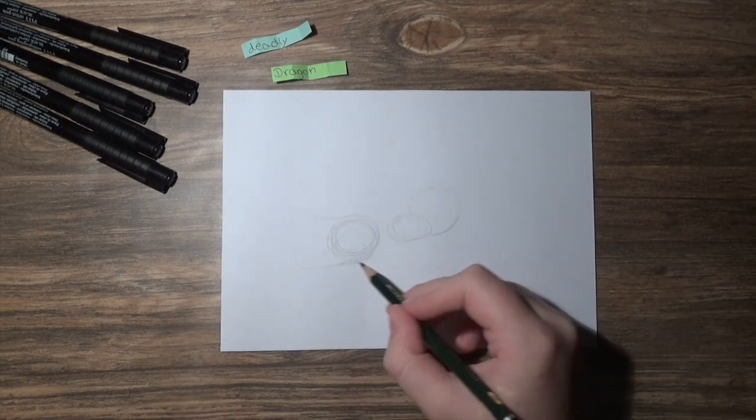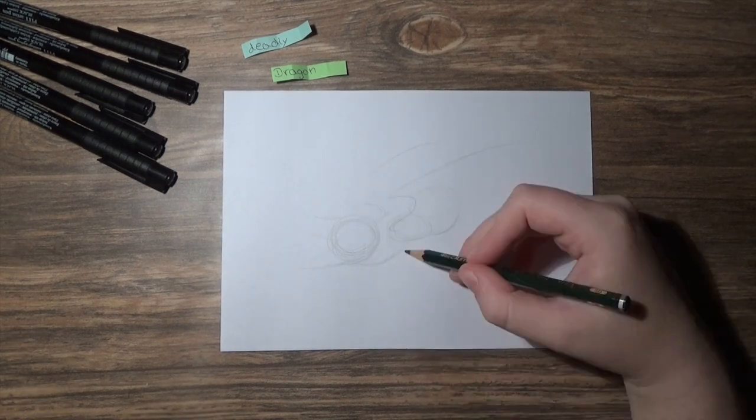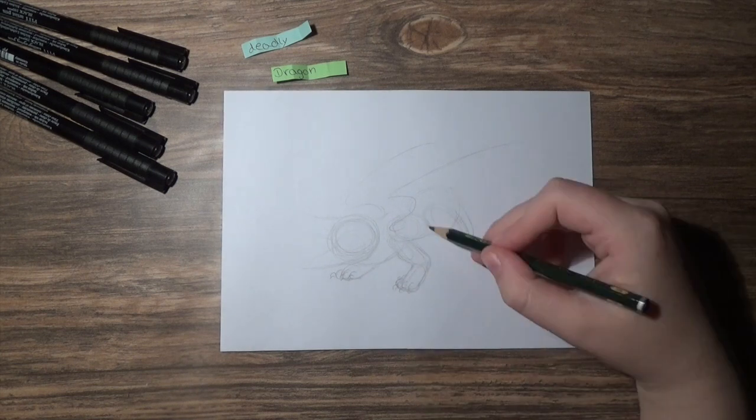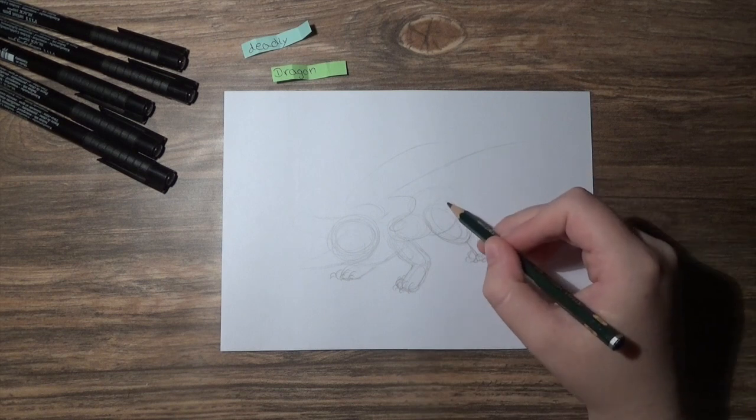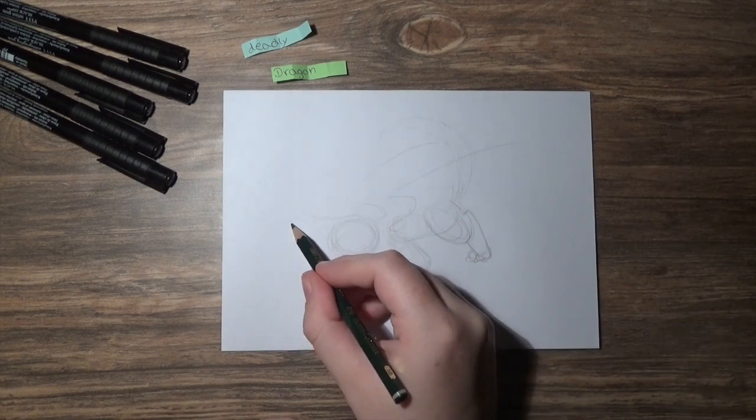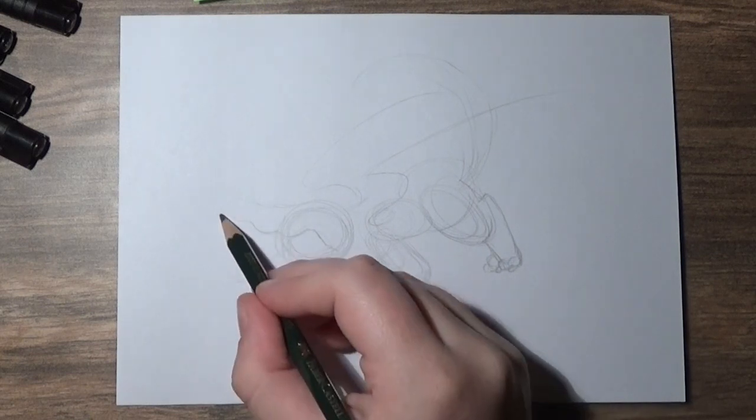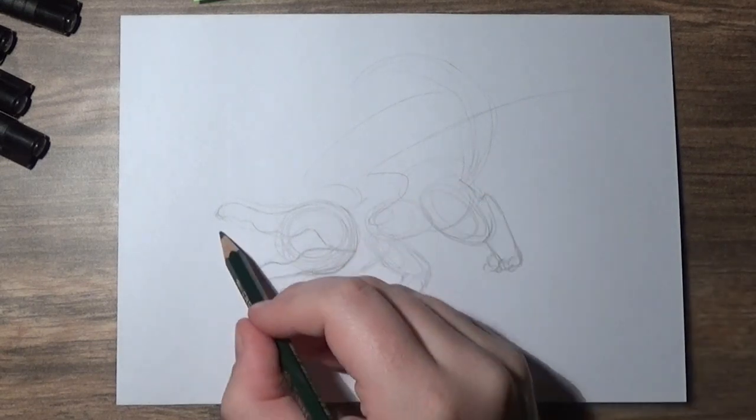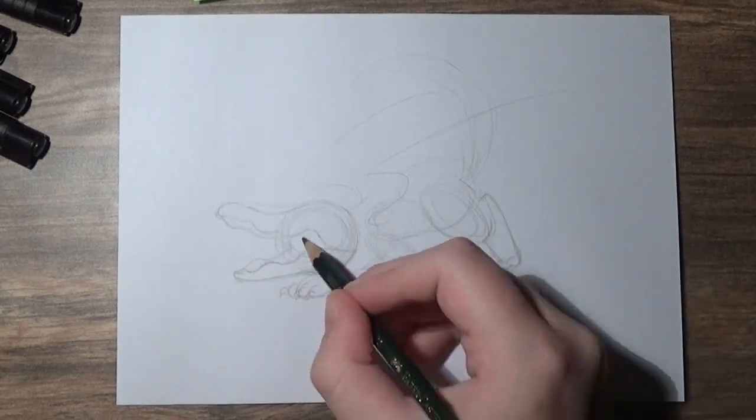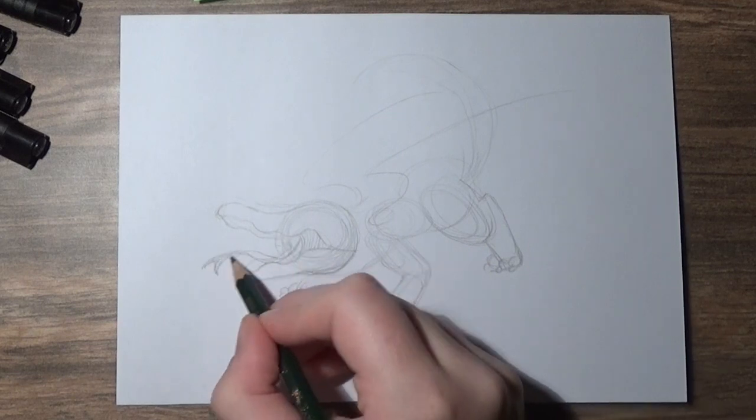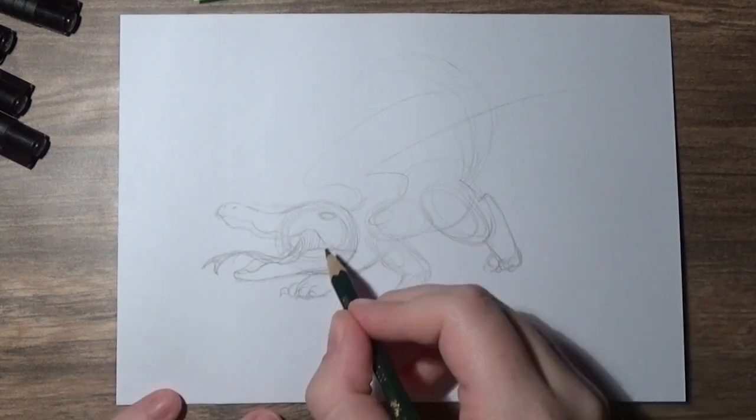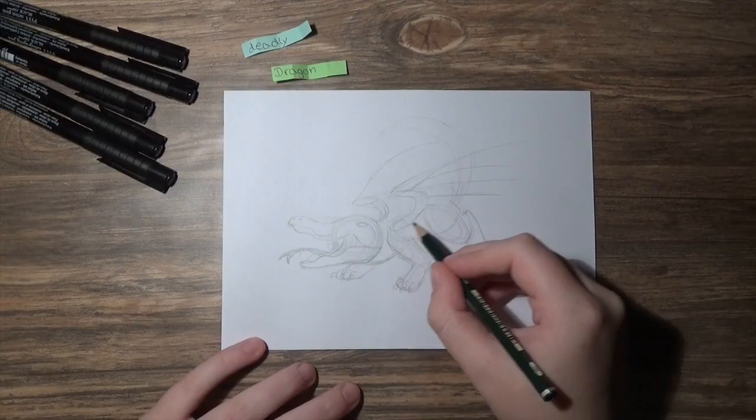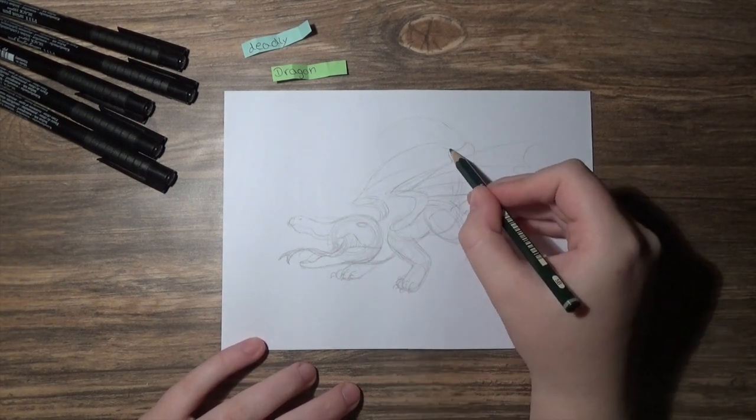What do we have? We have a scorpion - that's really obvious because there is this scorpion tail. We also have crocodile, that's the head. And last but not least there is also cheetah in the design. You can see that in the paws and of course the obvious cheetah spots I will add in the end.